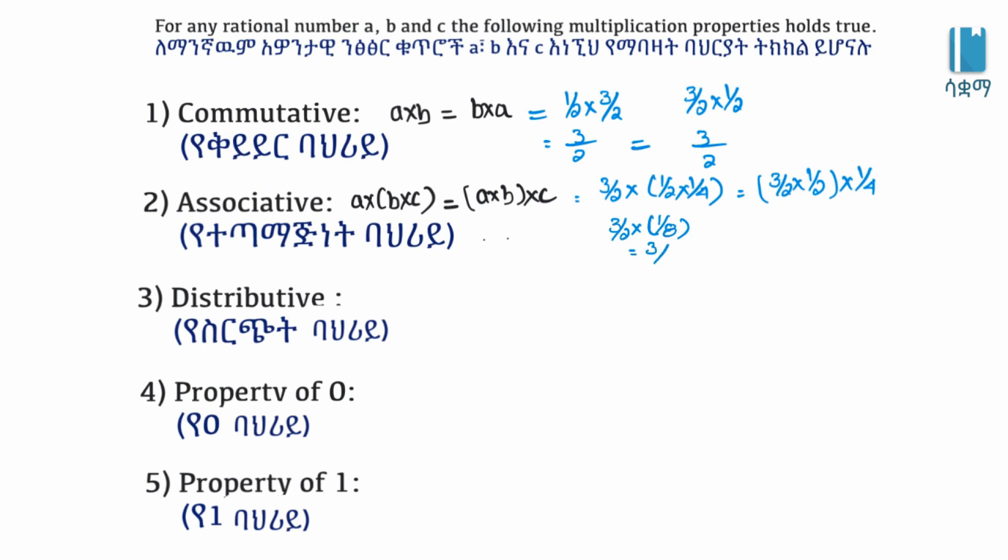3 times 1 is 3, 2 times 8 is 16, giving 3 over 16. The same is true the other way: 3 over 2 times 1 over 2 is 3 over 4, times 1 over 4. 3 times 1 is 3, 4 times 4 is 16. So rational numbers have associative property.